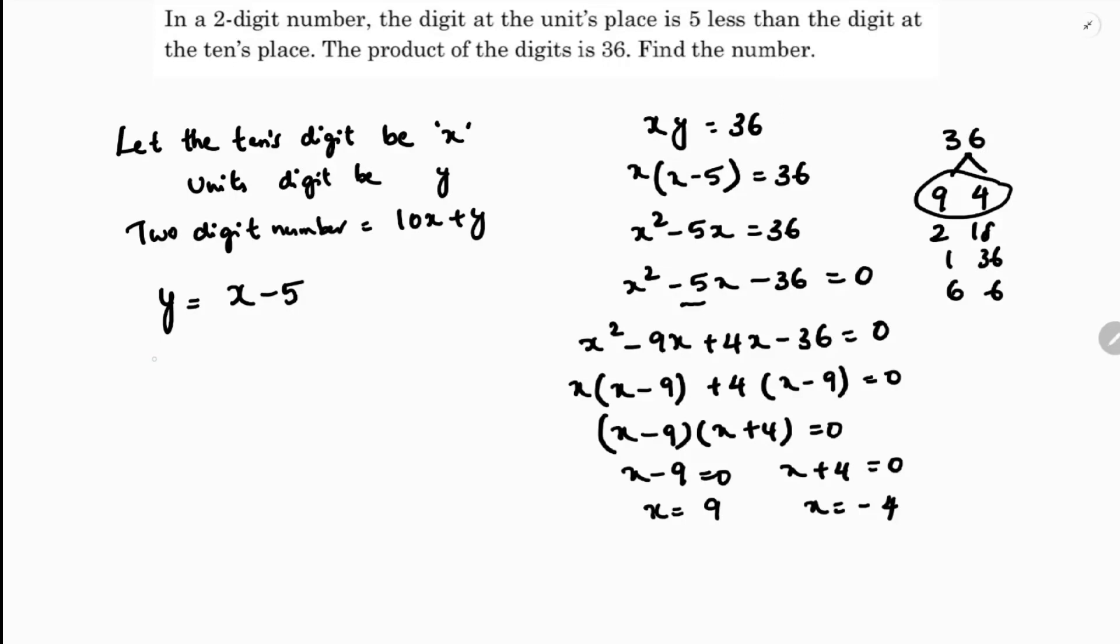If x equals 9, then y equals 9 minus 5, so y equals 4. Two digit number is 10x plus y, 10 times 9 plus 4, 90 plus 4.